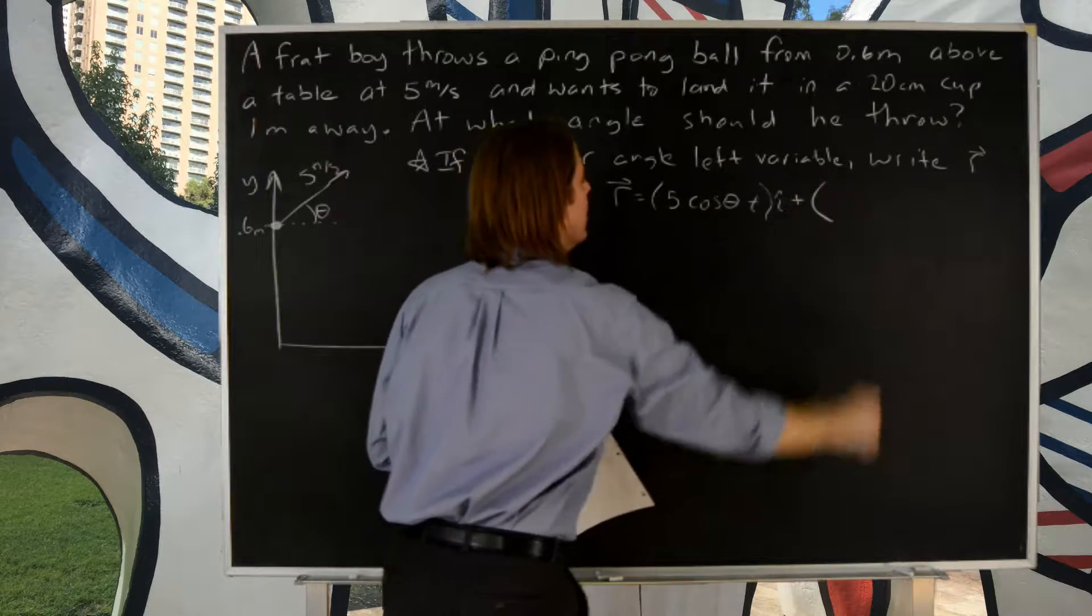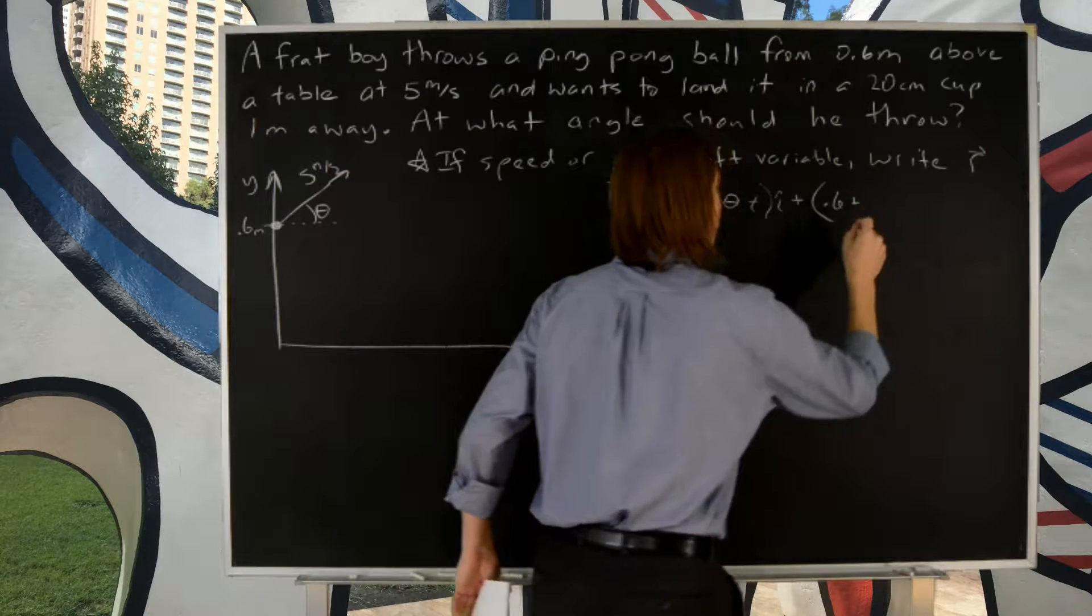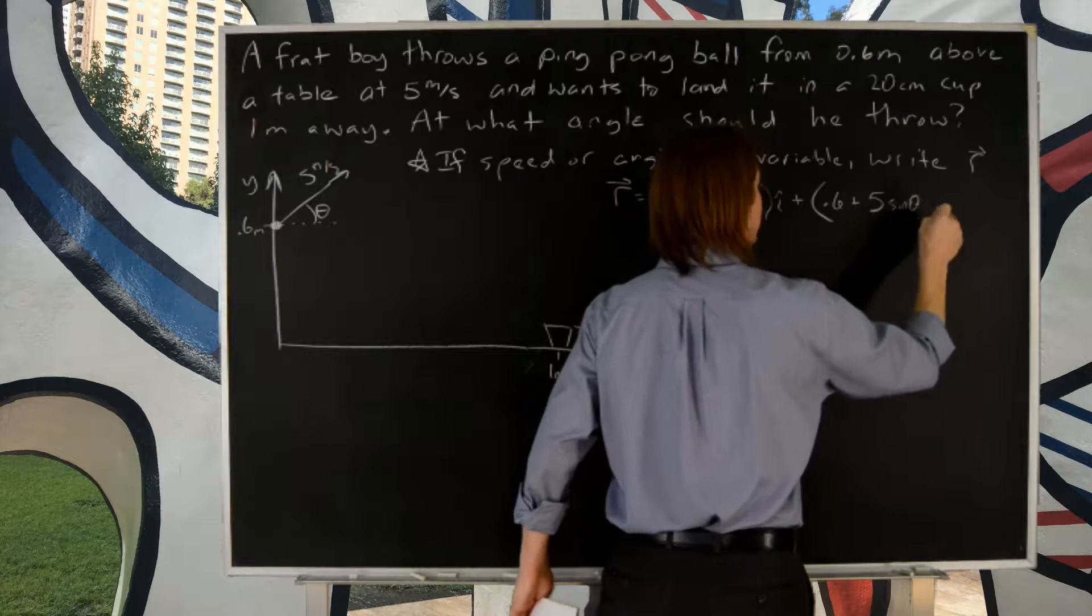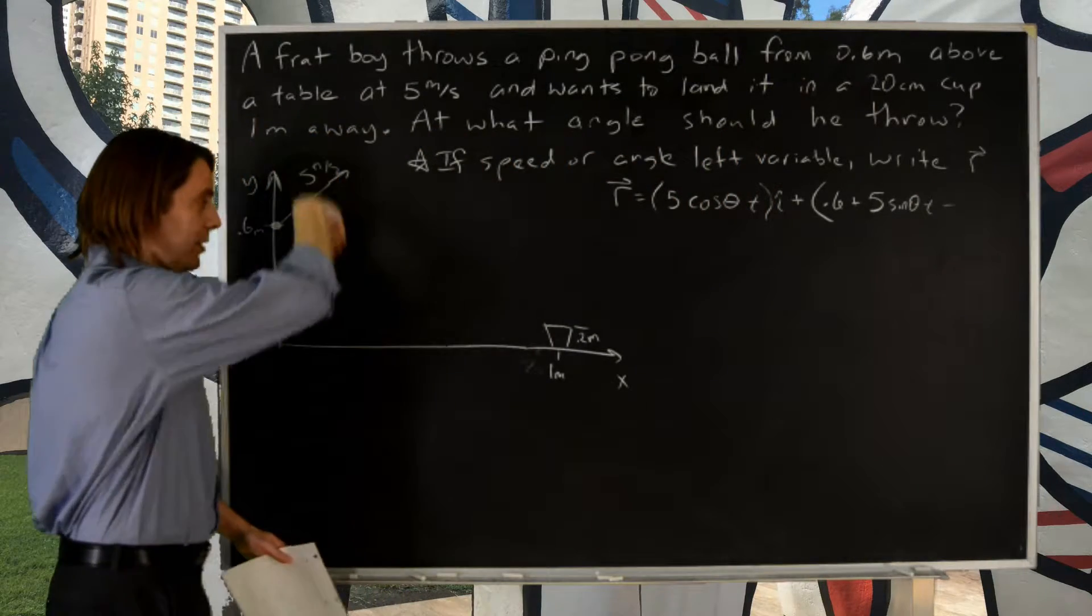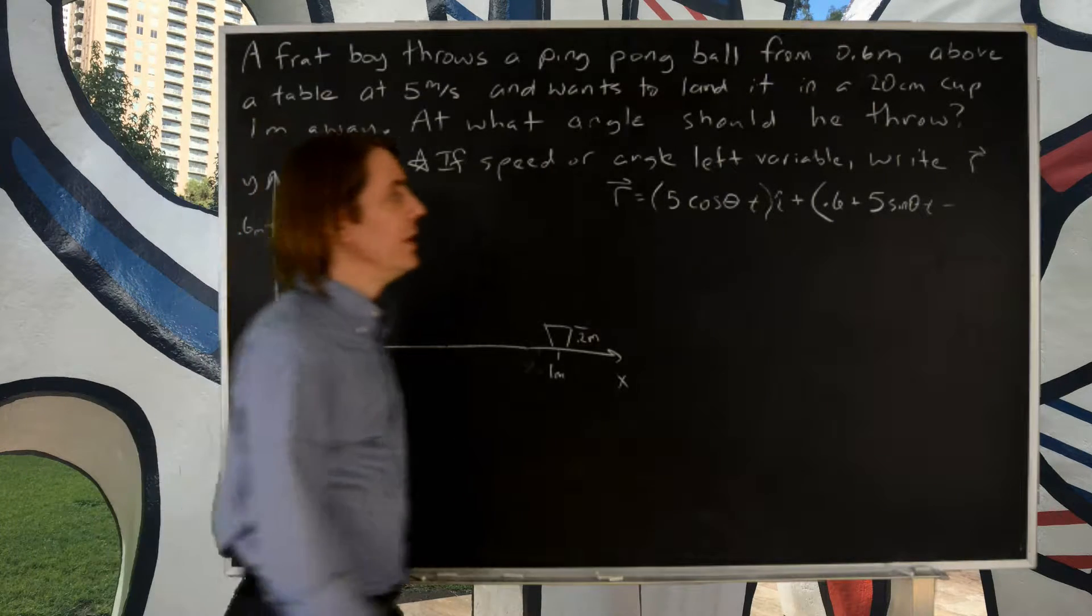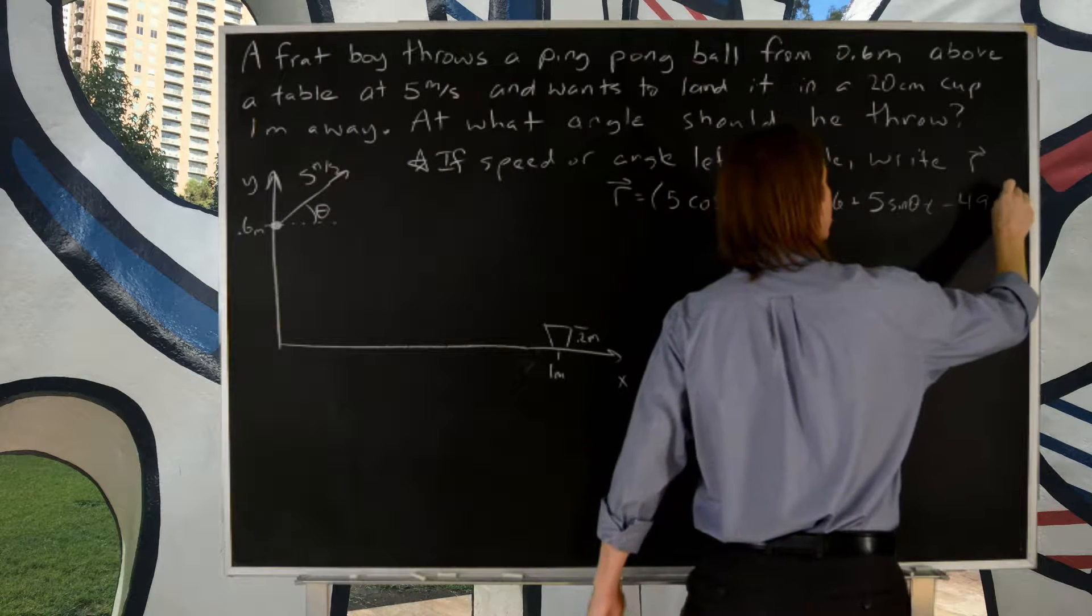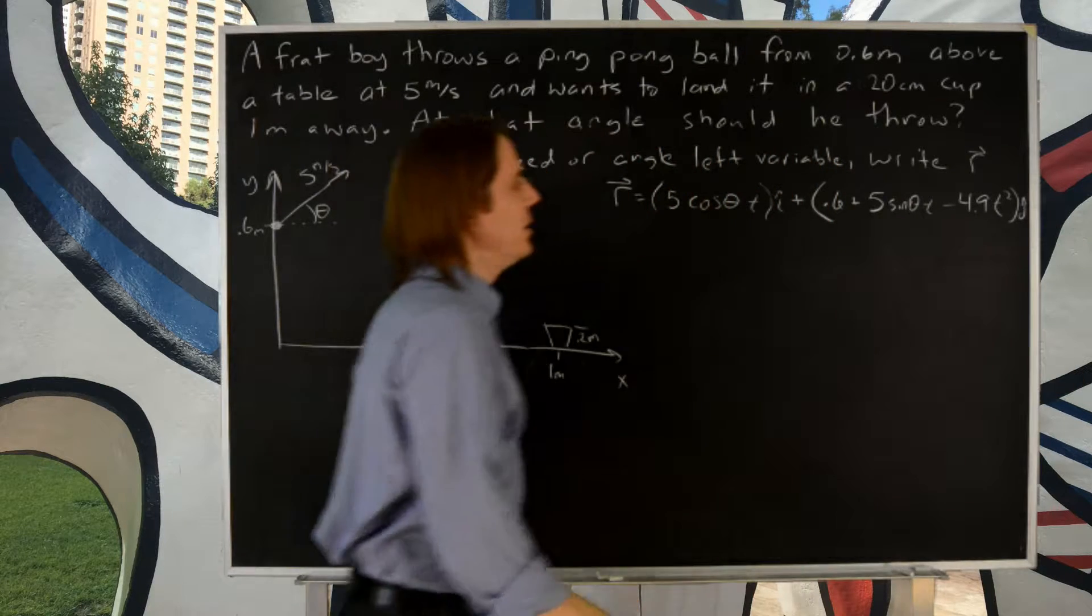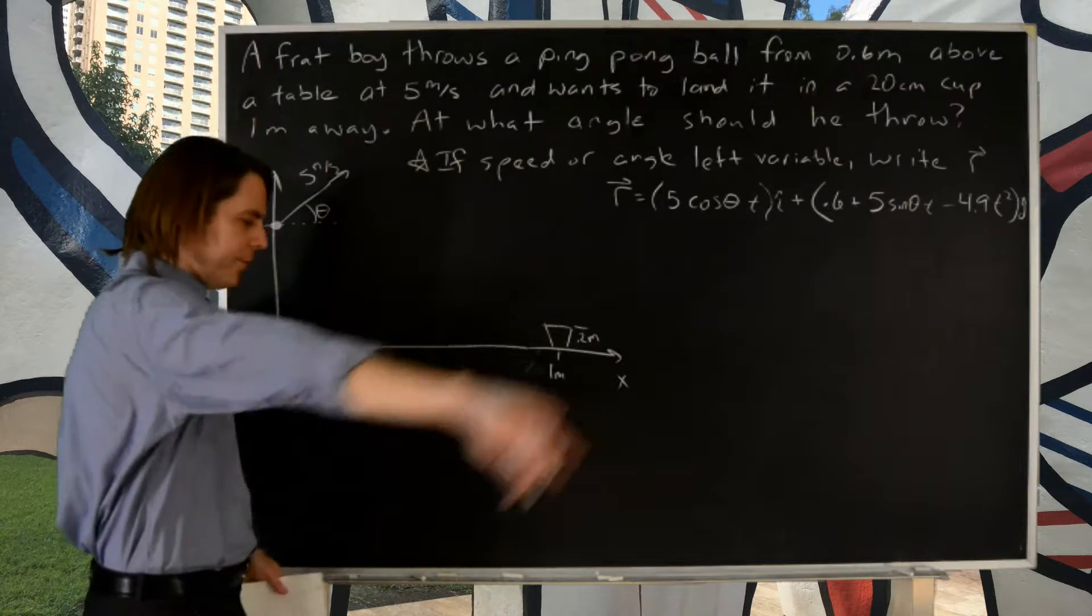And now in the y direction, it does have an offset, 0.6 meters, it does have an initial 5 sine theta initial velocity times t, and of course in the y it's accelerating down due to gravity, and that's minus one half g, or minus 4.9 t squared. That's the plus one half at squared turns it into minus 4.9 t squared on the y hat, on the y axis, j hat. All right, so there is the position for all time.